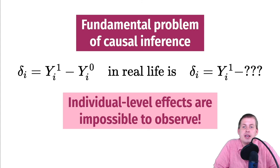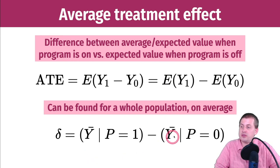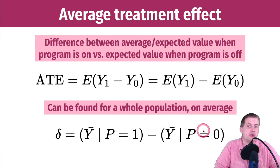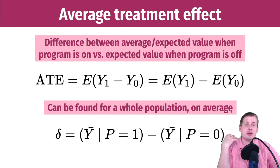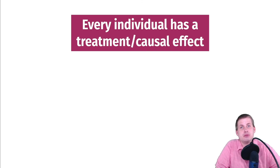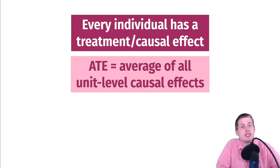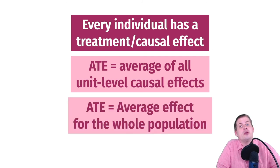To get around that, we use something called the average treatment effect, which is the difference in average outcomes. The causal effect is the average outcome when the program is on minus the average outcome when the program is off, for the entire population. Every individual has a unit-level causal effect, and the average treatment effect is the average of all those unit-level causal effects.